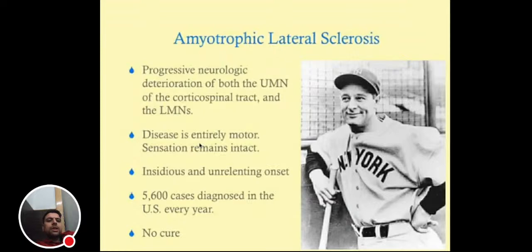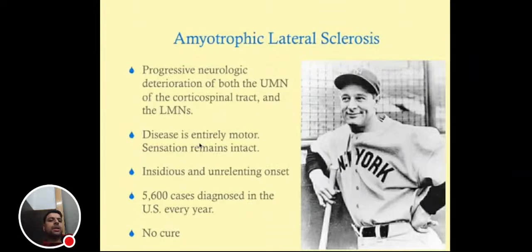Good evening doctors, welcome again. Today we are going to discuss amyotrophic lateral sclerosis and rheumatology MCQs. ALS is a progressive neurologic deterioration of both upper motor neurons of the corticospinal tract and lower motor neurons. The disease is entirely motor — sensation remains intact — with insidious and unrelenting onset.